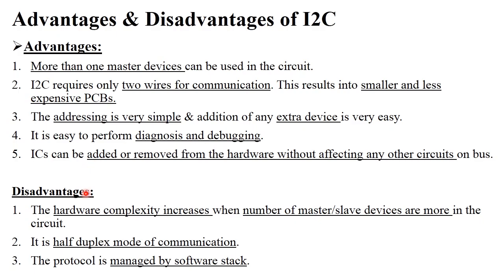The disadvantages of I2C protocol are: first, hardware complexity increases because there are multiple masters and multiple slaves, making circuit design complicated. Second, I2C operates in half-duplex mode. Third, this protocol is managed by a software stack — since the master handles multiple slaves with multiple tasks, all tasks are stored in a stack by priority, and the master responds to each task according to that priority.